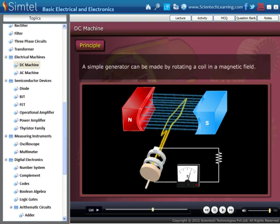A simple generator can be made by rotating a coil in a magnetic field. A graph of EMF versus conductor in one revolution will be a sine wave representing AC.